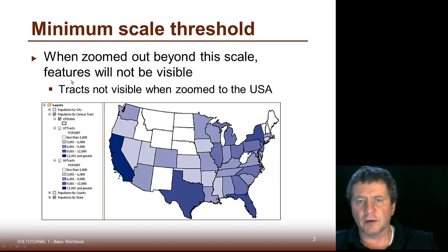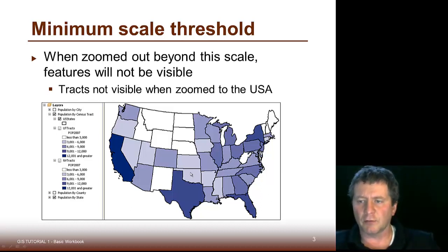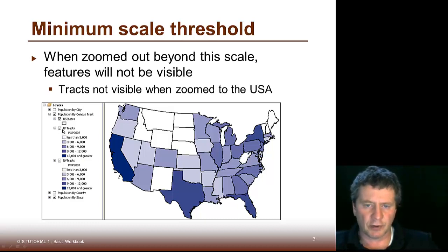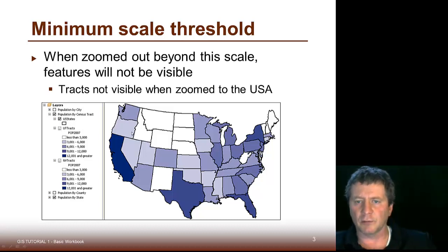The other thing we can do is that when you zoom out beyond a particular scale, we can get things to disappear. For example, you may not want all of the counties when you get far enough out looking at the United States. These show up typically as grayed out over here, so this particular layer has been turned off when the scale gets beyond a certain point.